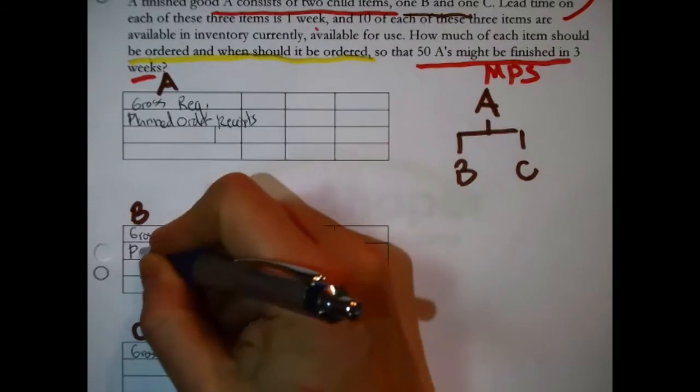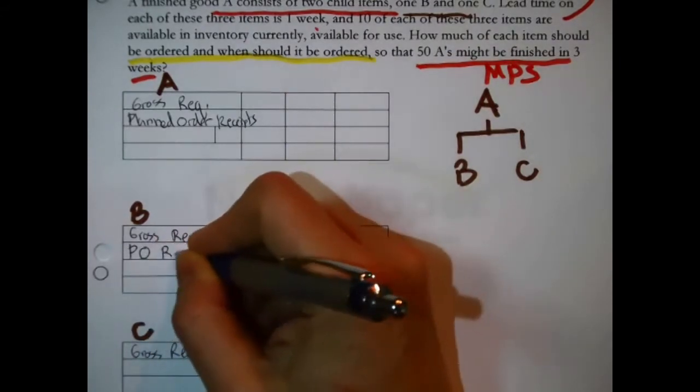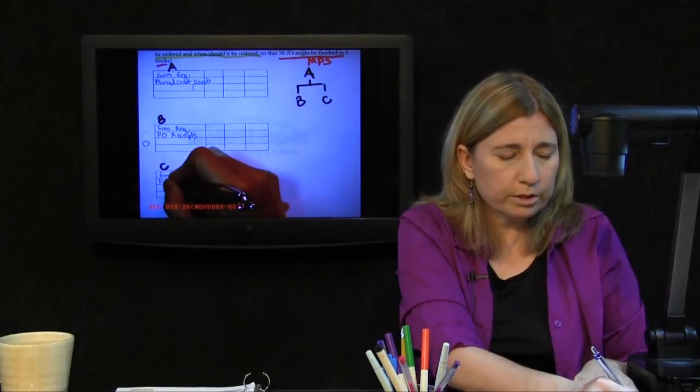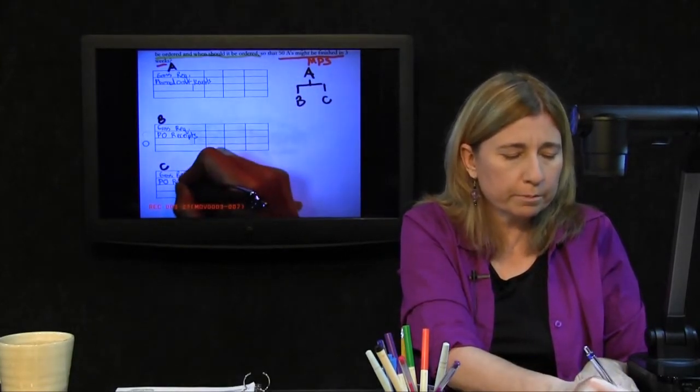That looks better. And then the same thing here. It's the same level. P for plan, O for order, receipts.